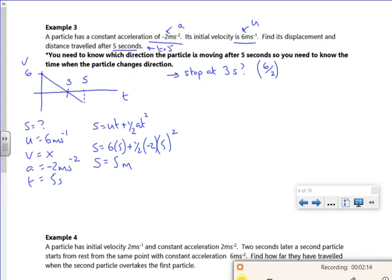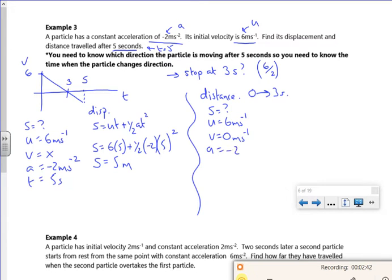So that was my displacement that I've got. In terms of my distance, if I do it for the first 3 seconds, that will tell me how far I traveled to when I stopped. So 0 to 3 seconds. So I know that I've stopped. So U was 6, V is nothing, A is minus 2, and T is 3.